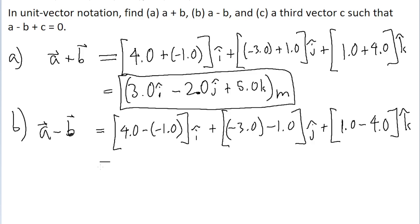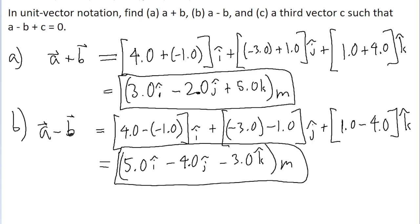So now once again, we'll simplify each of the components to get a more simple answer. So four minus negative one is just the same as four plus one. So that's five in the i component. Negative three minus one, that's negative four for the j component. And one minus four, that's negative three for the k component. And this is our new vector again with units of meters. And that's our answer to part b.